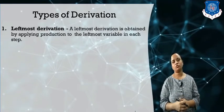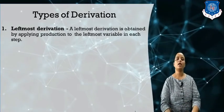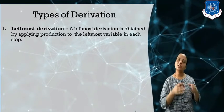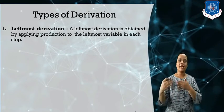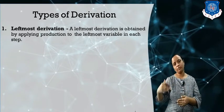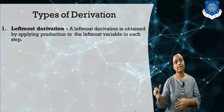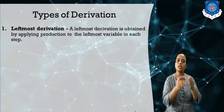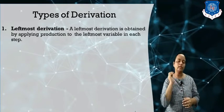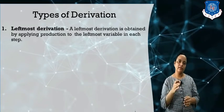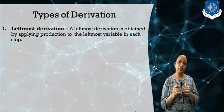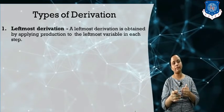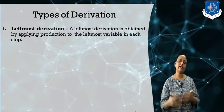Derivation tree is basically of two types: leftmost derivation and rightmost derivation. Derivation can refer to derivation steps and derivation tree. If the string is generated in tree form, we call it a derivation tree. If we generate strings using a step-by-step form, it is called the derivation step.